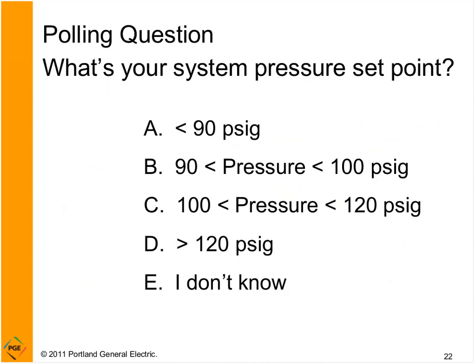Now let's move on to pressure. Use your arrow tool and indicate what pressure your system operates at. I hear 'I don't know' — that's actually a great answer, because it gives an energy consultant a good opportunity to come into your plant and find ways to save energy. Some attendees picked less than 90 PSI — maybe pressure savings aren't the opportunity for them. But the nominal value people throw out — 'we operate at 100 PSI' — often reflects that they really don't know what they need.